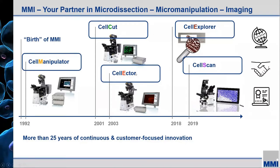Selector is another product — a microcapillary-based unit for isolating cells that are free-floating in solution or slightly adherent at the bottom of a dish, plate, or well, perhaps circulating tumor cells. Cell Explorer is a more recently introduced software product for automatically identifying cells and structures of interest for the purpose of isolating them using either microdissection or the capillary-based approach. But you're here today for Cell Scan, the latest in our product offering — the whole slide scanning system.